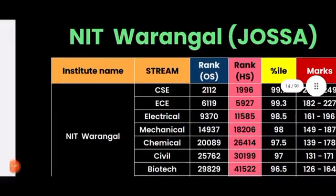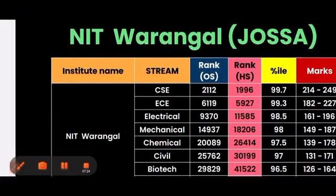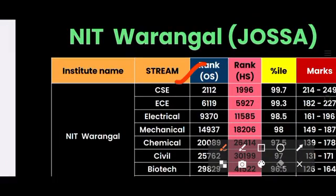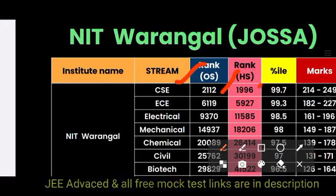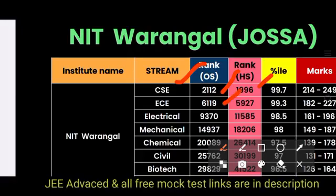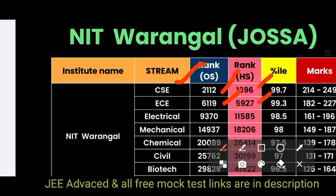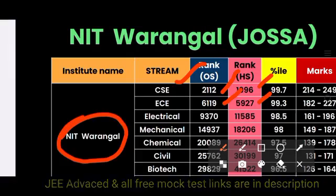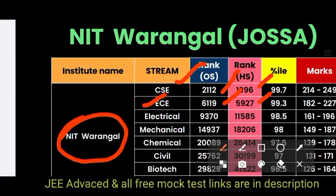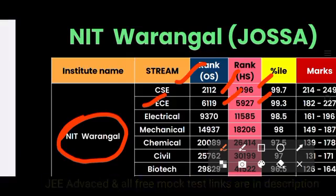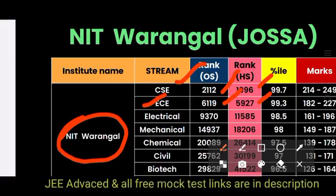In NIT Aurangabad, if you see Computer Science for other state it is 2,012 and for home state it is 1,996. ECE is 619 for other state and for home state it is 5,927. If you check ECE especially for Aurangabad, the home state cutoff is less compared to other state, which means many Telugu students write JEE and want to take their home state itself, so that's why the cutoff is less and the competition is more for Aurangabad.